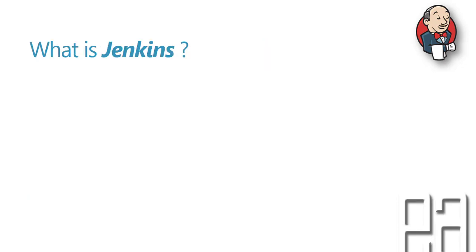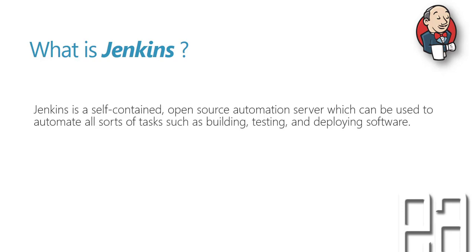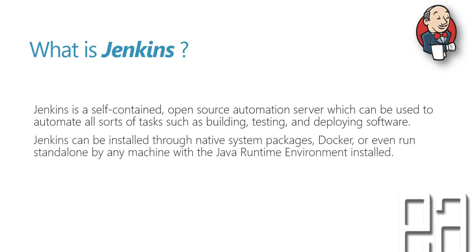So first of all, what is Jenkins? Jenkins is a self-contained open source automation software which can be used to automate all sorts of tasks such as building, testing, and deploying software. Jenkins can be installed through native system packages, Docker, or even run standalone by any machine with a Java runtime.